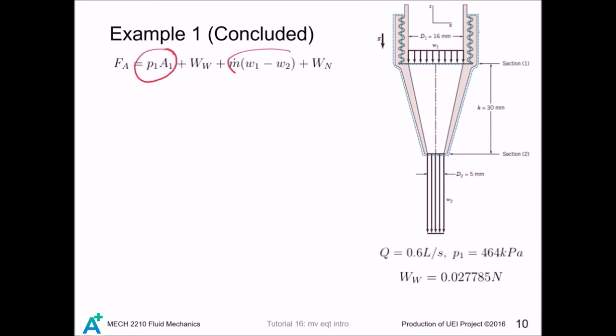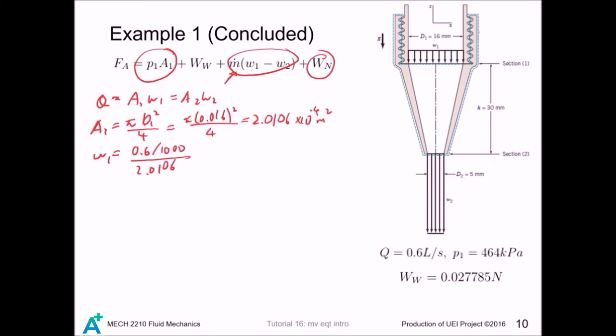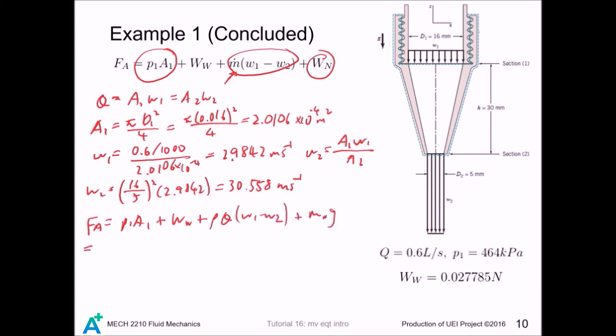So now what remains is to get the values of each term and plug into this equation. So let's do this term first. We have Q equals A1 W1 and A2 W2. So we calculate A1 first, and W1 equals... and we have W2 equals... and we revise our formula and we substitute the values.